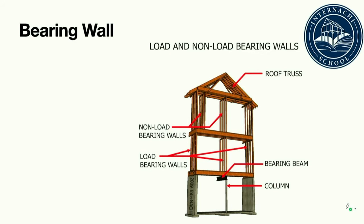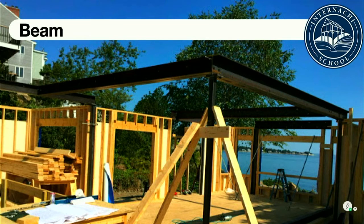Sometimes the structural weakness is seen almost immediately. In other cases, the weakness is discovered only over time. A girder is a horizontally placed wooden, steel, or engineered member which supports floor framing members. It is a primary support member and is often supported by wooden or steel columns or posts, exterior walls, or foundational elements.